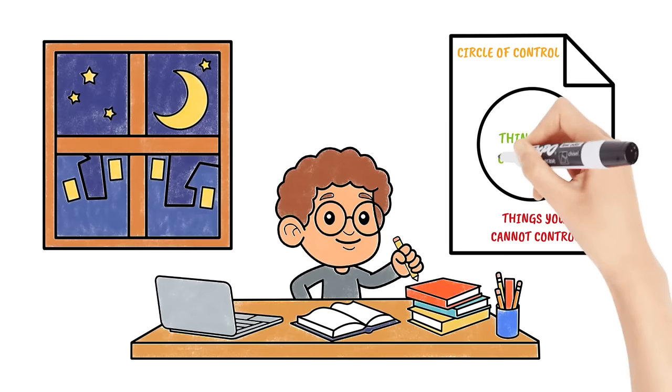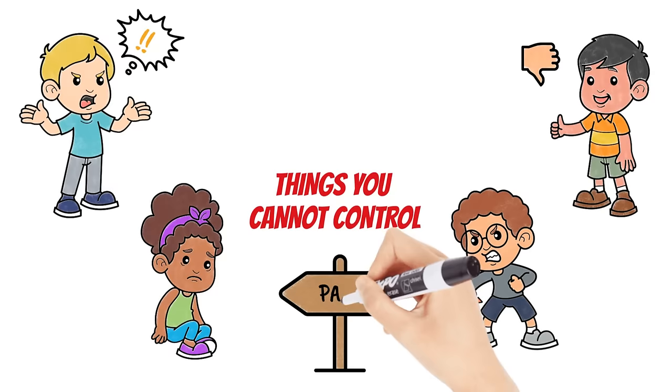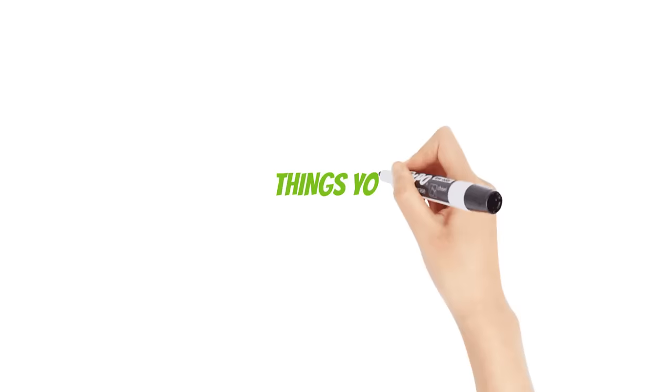Some examples of things you cannot control might include how someone treats you, how other people act, whether people like you or not, how other people feel, your past actions, world problems, or the weather.